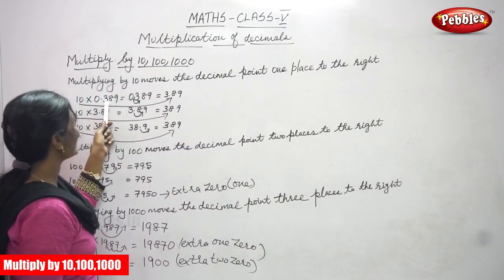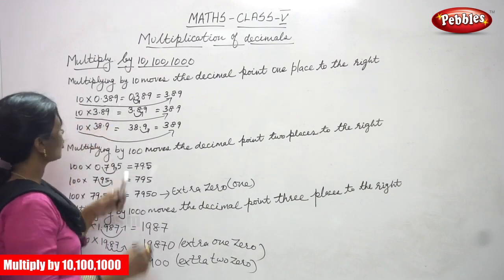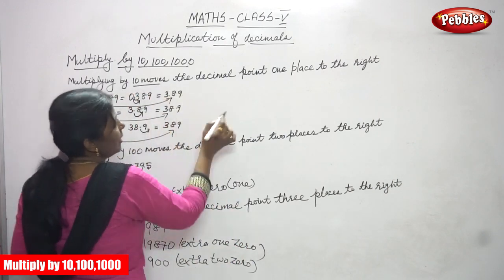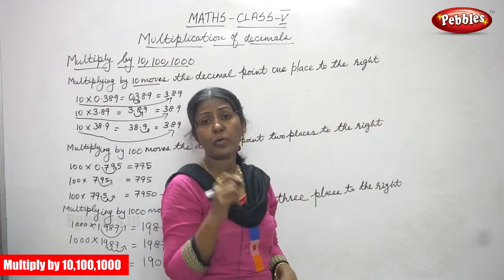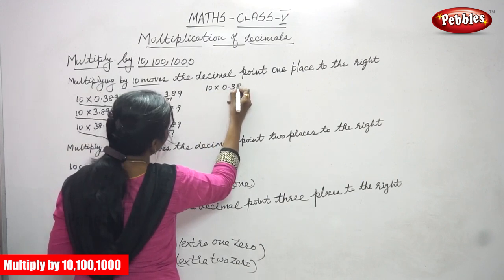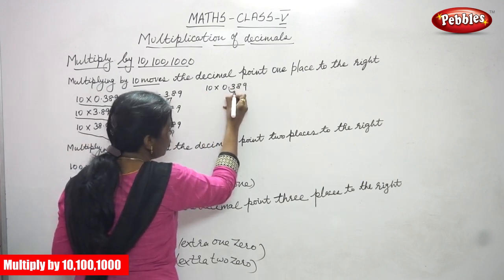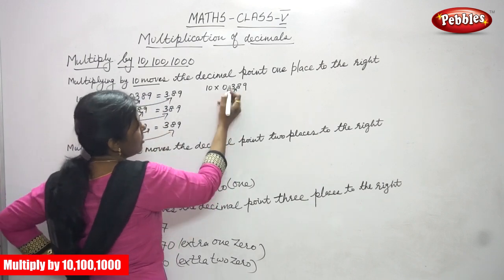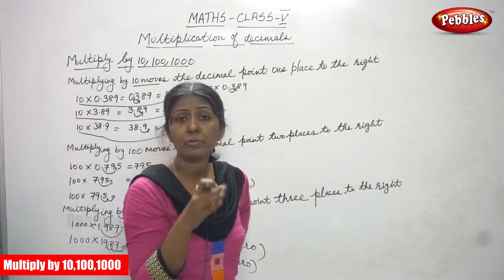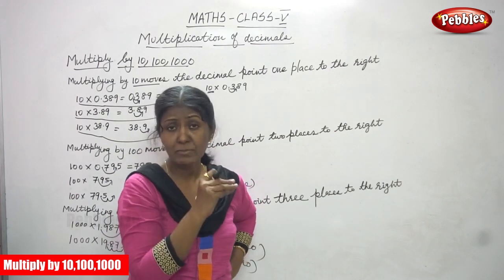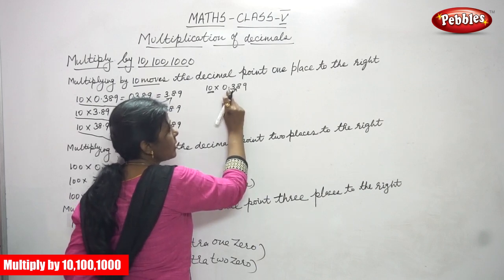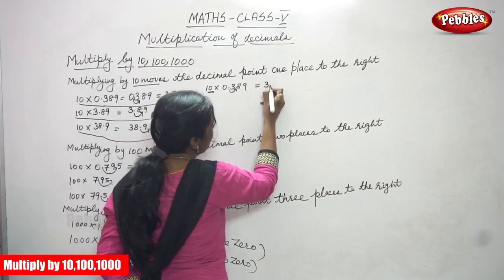10 into 0.389. Look at this point. You are going to multiply the decimal number 0.389 by 10. If you multiply by 10, you have to move the decimal point one place to the right side. Move one place to the right because you have how many zeros? Only one zero. So you have to move only one place. If you have two zeros, you move two places to the right. If you have three zeros, that means 1000, you move three places to the right. So the decimal point moves one place to the right, and the answer is 3.89.